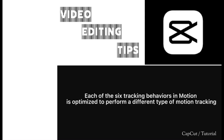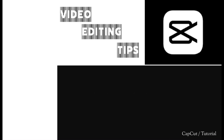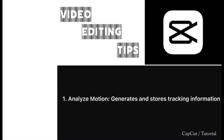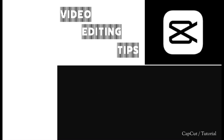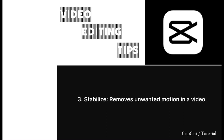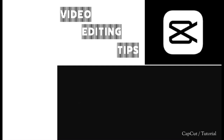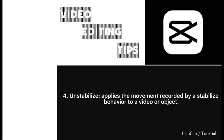Each of the six tracking behaviors in Motion is optimized to perform a different type of motion tracking. 1. Analyze Motion generates and stores tracking information. 2. Matchmove applies the movement of a video to another object, so they appear locked together. 3. Stabilize removes unwanted motion in a video. 4. Unstabilize applies the movement recorded by a Stabilize behavior to a video or object.